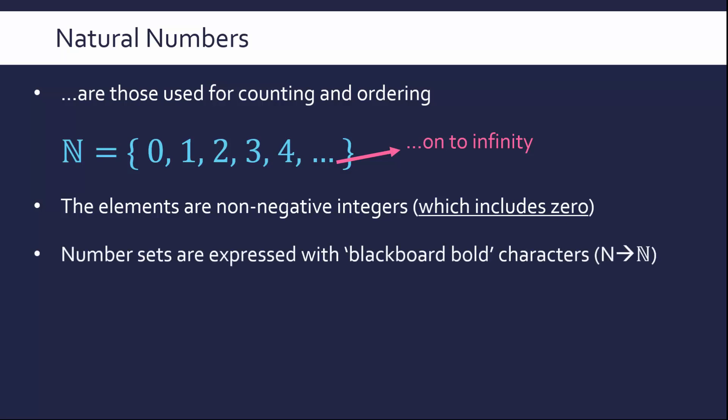Going back to that font, we represent number sets or number systems using what is called blackboard bold characters. We have that sort of double line in the letter. But of course on paper you can just write it as a normal N. Do not spend time in an exam writing it how it looks like it will be printed on a computer. That's how you represent it ideally in blackboard bold, but just use a normal letter is fine.